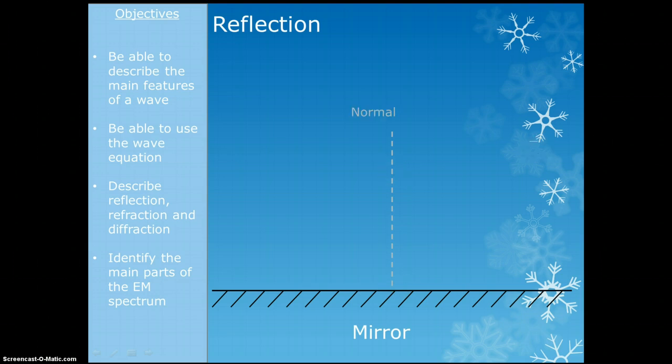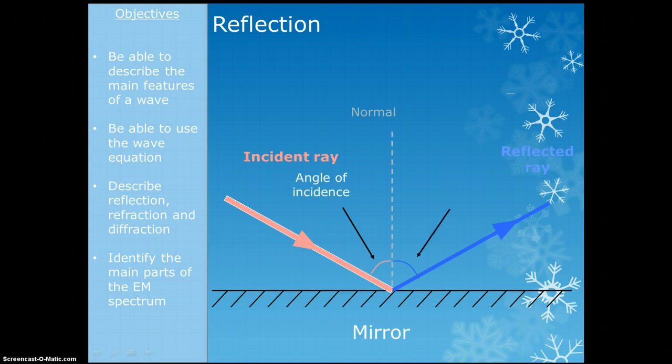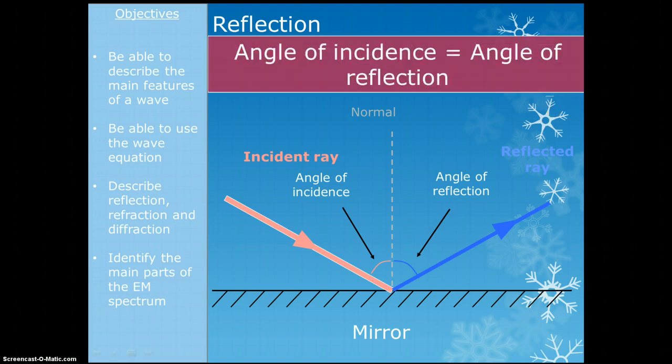Then I draw my light ray coming in - the incident ray. The one that comes out is the reflected ray. The angle between the incident ray and the normal is the angle of incidence. The angle between the reflected ray and the normal is the angle of reflection. In reflection, the angle of incidence will always equal the angle of reflection.